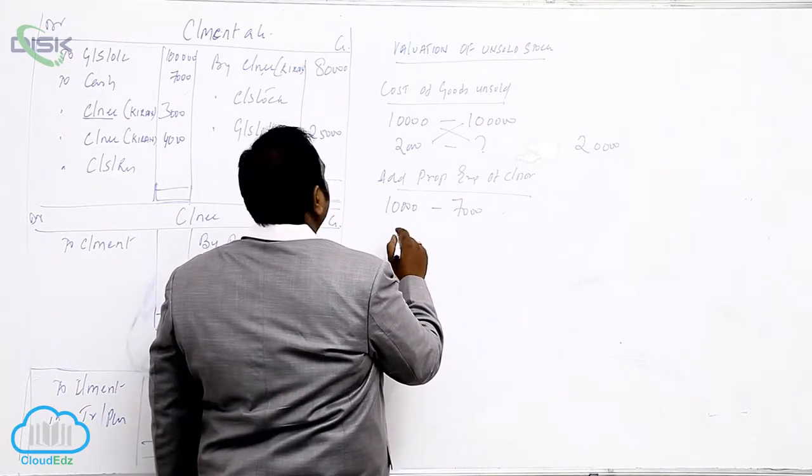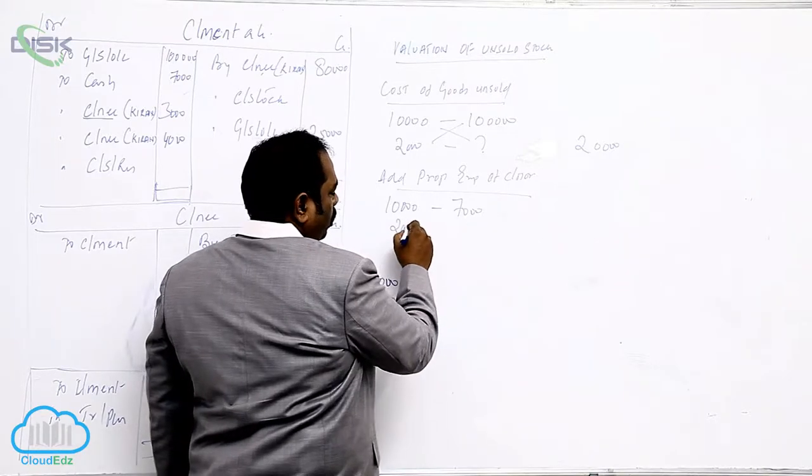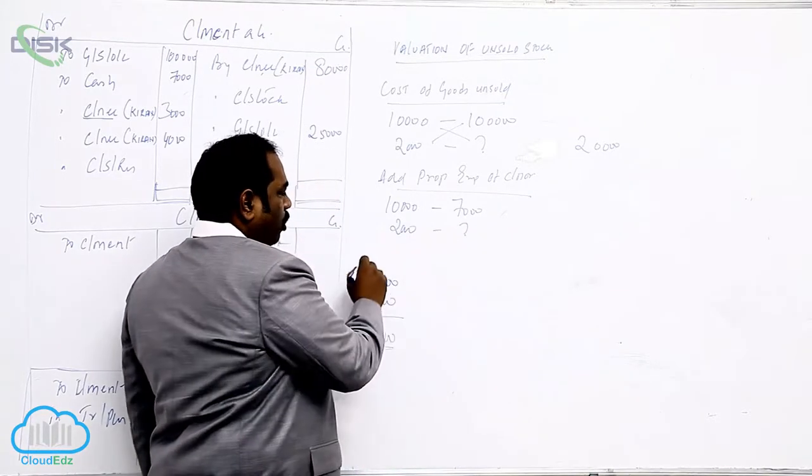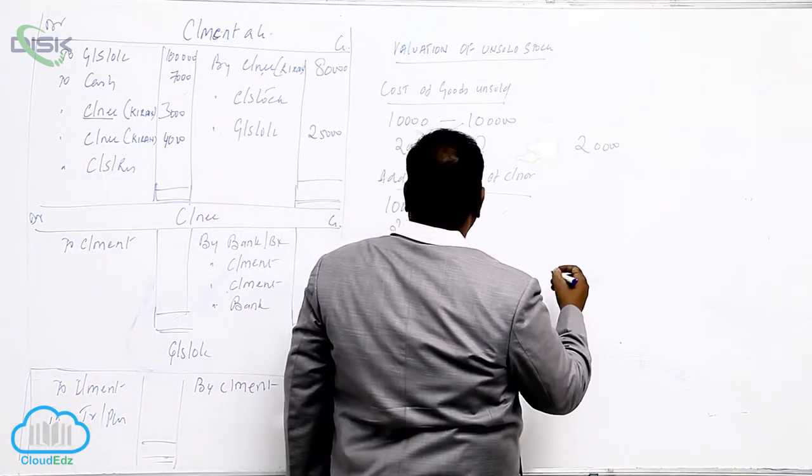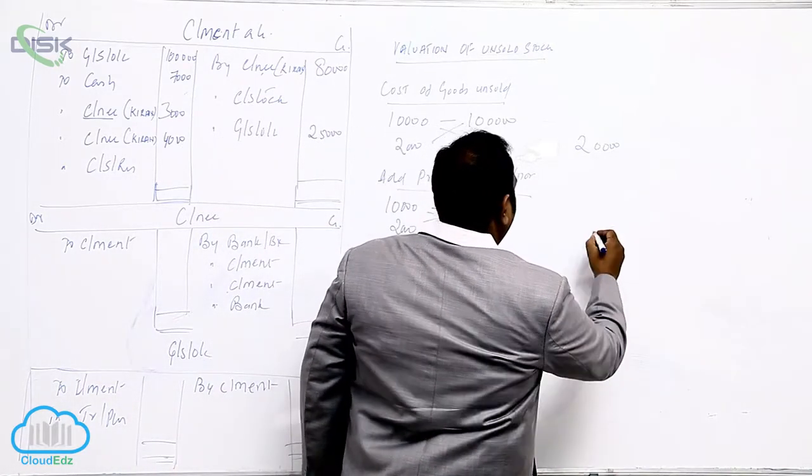What is stock left? Stock left is 2,000. For 10,000 cases, it is 7,000. For 2,000 cases, how much? 20%. Yes. 1,400.